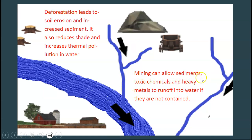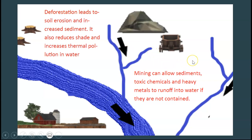Sometimes heavy metals are exposed as well, which can run off into water if not contained. Mining operations are supposed to contain all of that acid mine drainage, toxic metals, and related materials. But sometimes their containment ponds burst and can flow into streams and rivers.